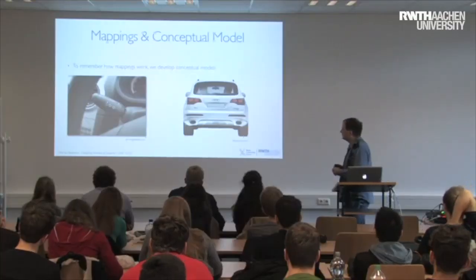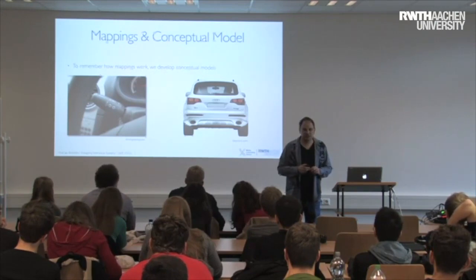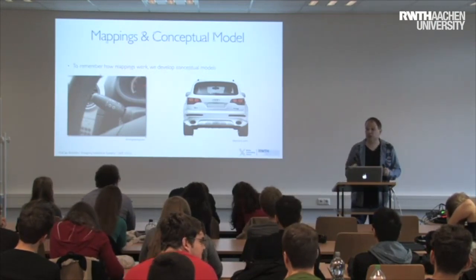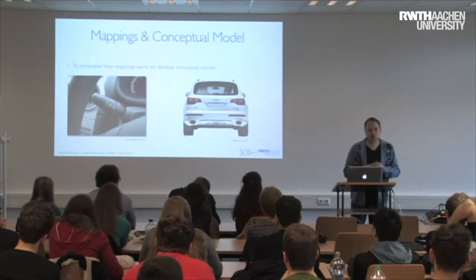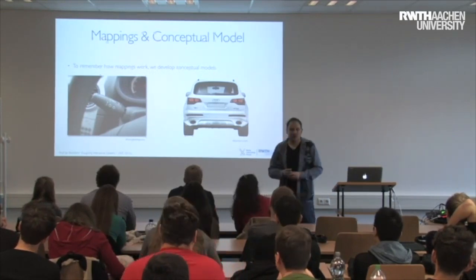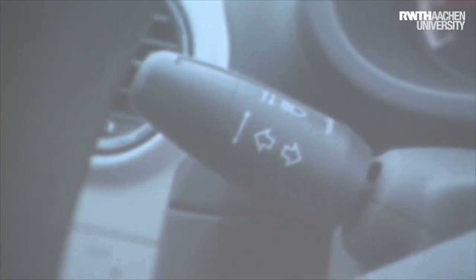Here's a great example of a mapping that seems odd if you think about it, but actually makes sense. Take the indicators in a car — the blinker. They're controlled by flicking a switch up and down. Is that a natural mapping to the left and right indicator light going off?